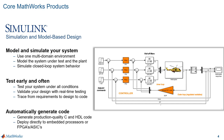And finally, you can automatically generate code. Instead of writing thousands of lines of code by hand, you automatically generate production quality C and HDL code that behaves the same way as the model that you created in Simulink. And then you can deploy that code directly onto your embedded processor or FPGA and ASIC.